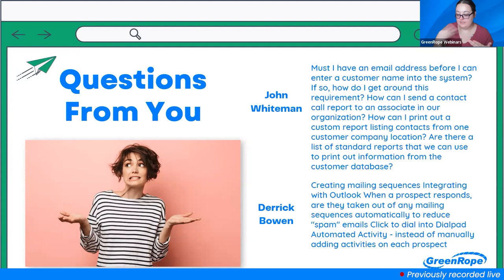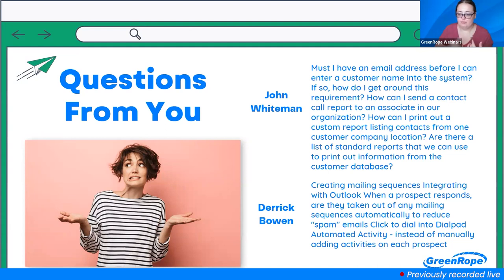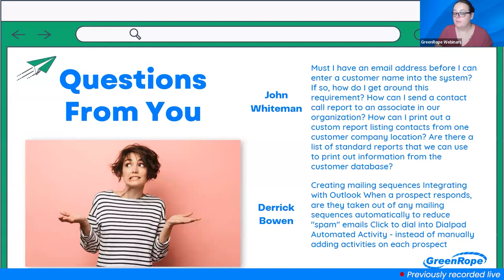Regarding dial pad automated activity — if you have a workflow or activity type by that name, you can set it up so a contact clicking a link in an email triggers the link library to fire a workflow for that activity. There are many ways to trigger workflows to assign activities: workflows, link library, drip campaigns, signup forms, user fields, tags — many places in the software where you can trigger a workflow for a contact based on actions like clicking a link or completing a journey step.